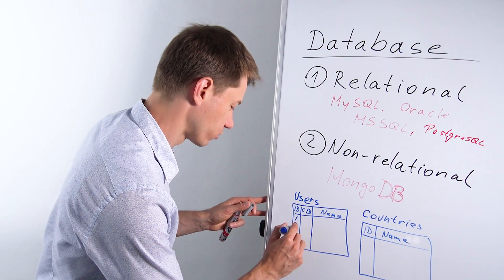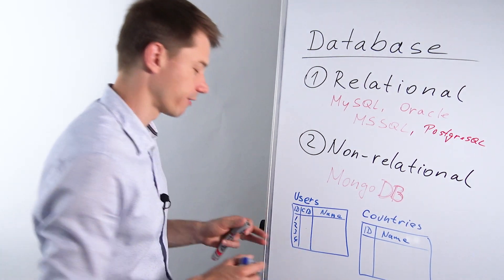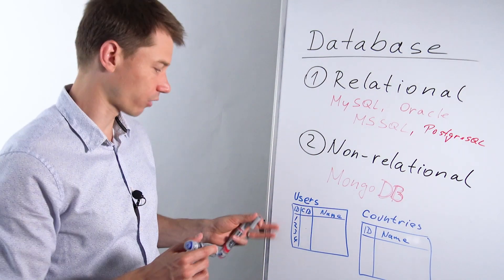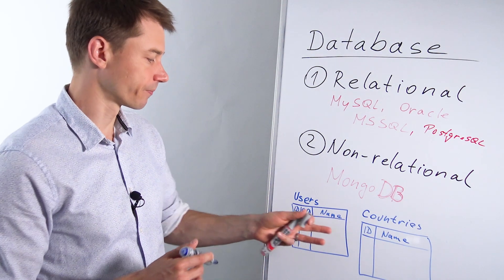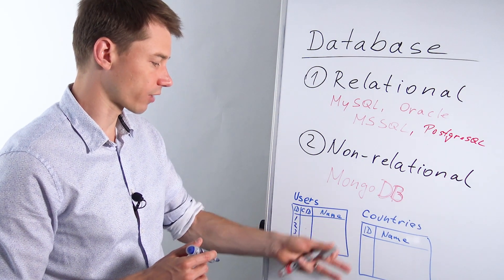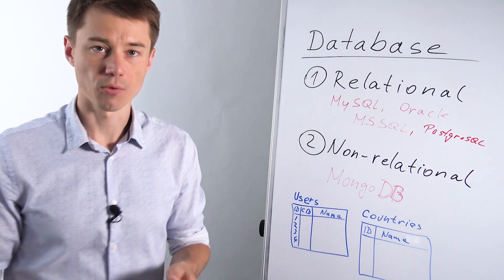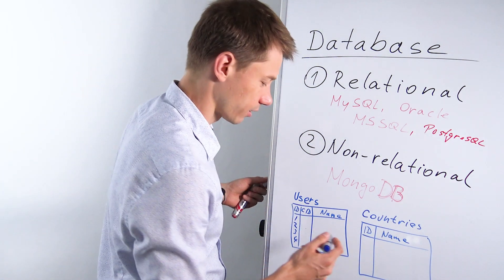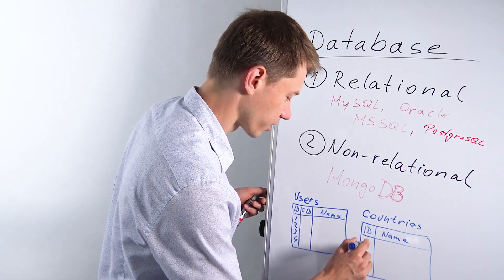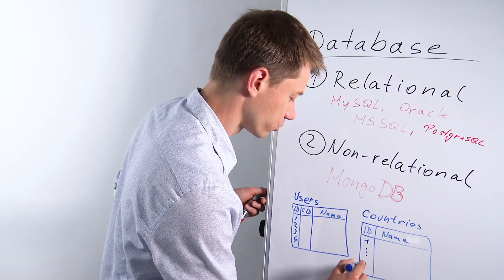So say you have a list of these users. So user number one, two, three, four, five, it could be tens or hundreds of thousands of users. And you have a list of countries. You know how many countries are out there, roughly 200 right. So say from one to 200.